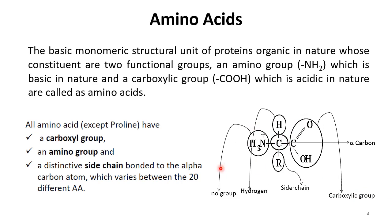Looking at the structure, the central carbon atom is attached to four different groups: a carboxyl group, an amino group, an R group (side chain), and a hydrogen atom. Apart from the R group, everything else is the same in all amino acids. The R group is the side chain — it may contain only hydrogen, or it could be a long or short chain of carbons or other atoms, and it varies from amino acid to amino acid.